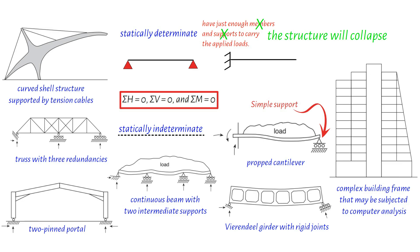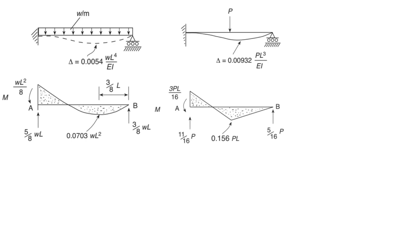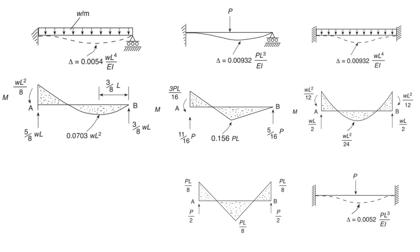Now let's discuss the analysis of indeterminate structures in more detail. Many textbooks provide standard cases that help determine the distribution of bending moments and shear forces in these structures. Take a look at the figures shown, which illustrate some examples of simple indeterminate beams. Whether it's a propped cantilever beam with a uniformly distributed load or a beam with a central point load, these cases provide insights into bending moment diagrams and support reactions.